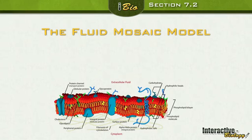Let's talk about the fluid mosaic model. What does fluid mean? Like a liquid — it flows. What does mosaic mean? It's like a picture made up of a bunch of smaller pieces that come together to form a larger image. You take individual things, put them together, and form a bigger picture.